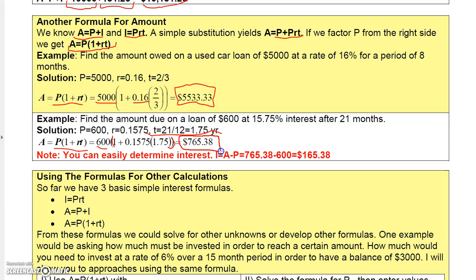You could easily get the interest from this. All you'd have to do is subtract the $600 that you invested, and then subtract it from 765.38, and you could easily get your interest. So these formulas sort of work in tandem, these two formulas that we've talked about so far. So the I equal PRT and the A equal P times 1 plus RT. These formulas work together easily with one another.